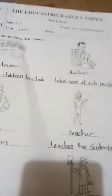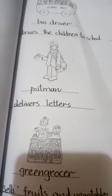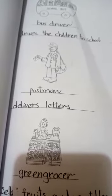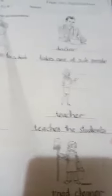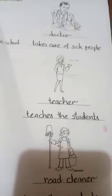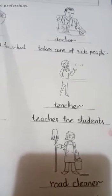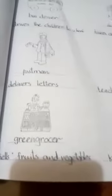Unka treatment karna yeh doctor ki job hoti hai. Next is postman. What is the job of the postman? The job of the postman is to deliver letters to people — logon ko unke letters unke gharon tak ja kar dena yeh postman ki job hoti hai. Next is teacher. What is the job of the teacher? Teaches the students — students ko parhaana, bachon ko parhaana, yeh teacher ki job hai.